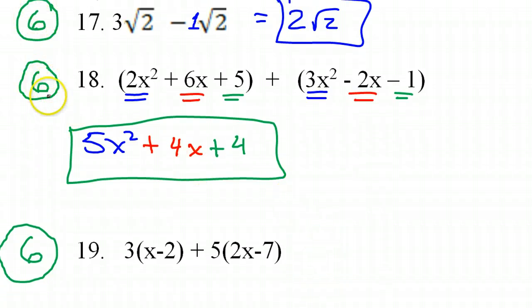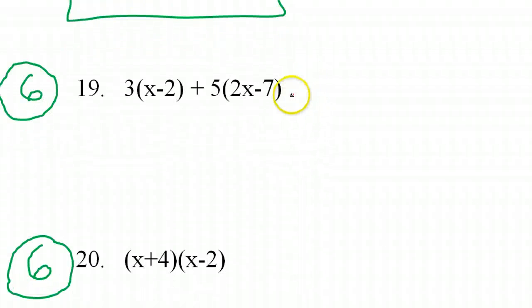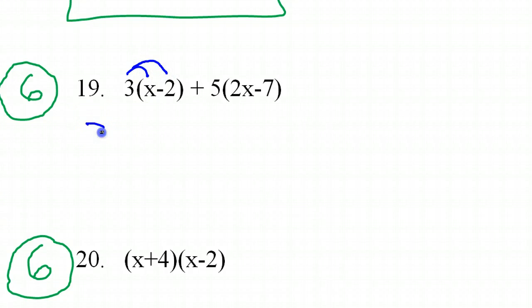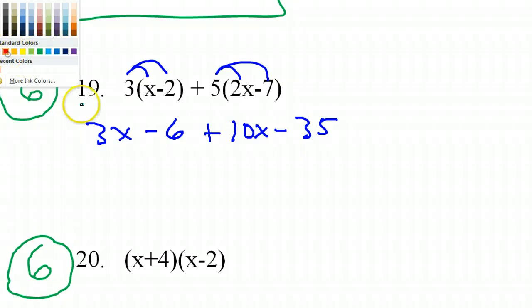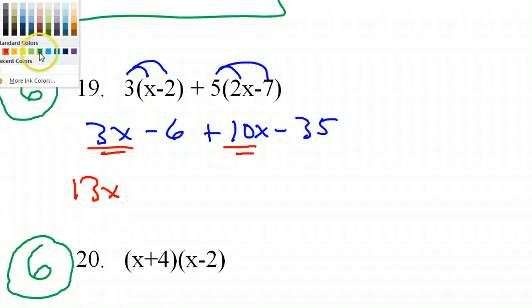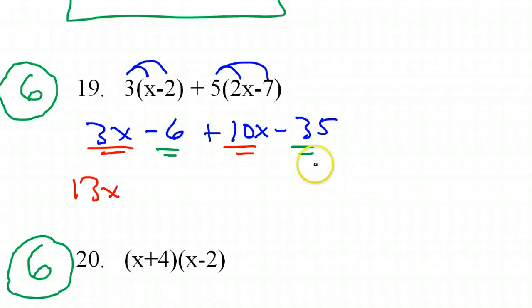All right. By the way, these numbers on the left, that's how much they were worth. All right. Let's do number 19. So we have to do a little distributive property first. So that's going to be 3x minus 6. And over here. So that's going to be 10x minus 35. All right. Combining those like terms. 3x and 10x. So that's 13x. And then negative 6 and negative 35. Well, that's negative 41. So 13x minus 41. That's your answer number 19.